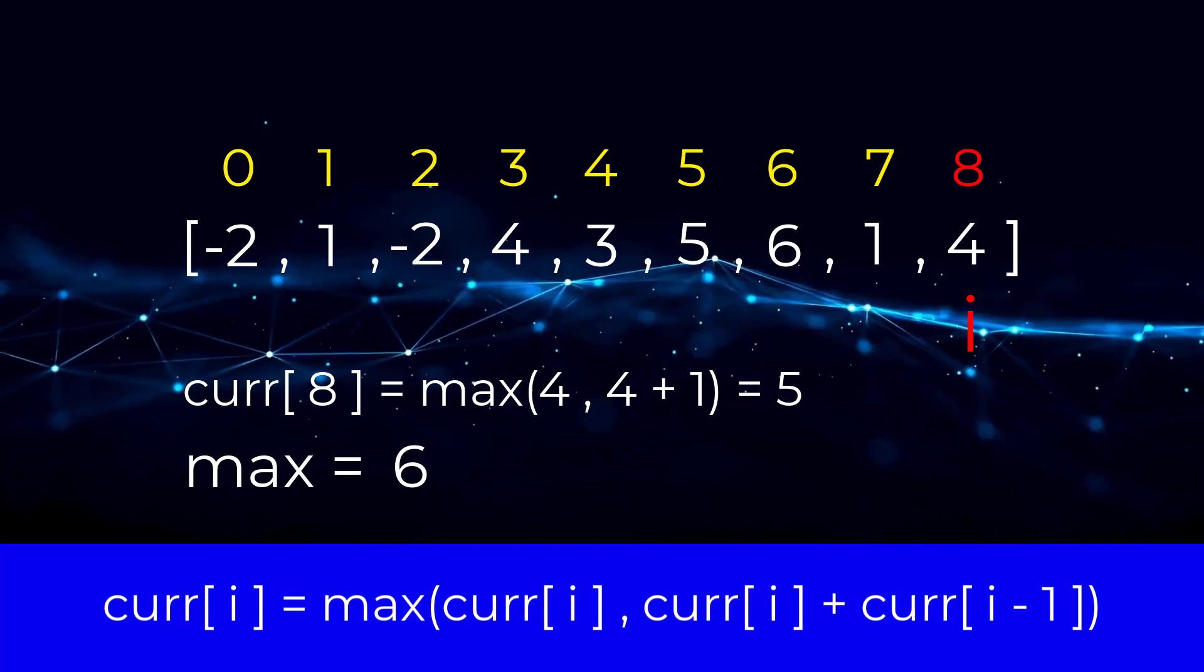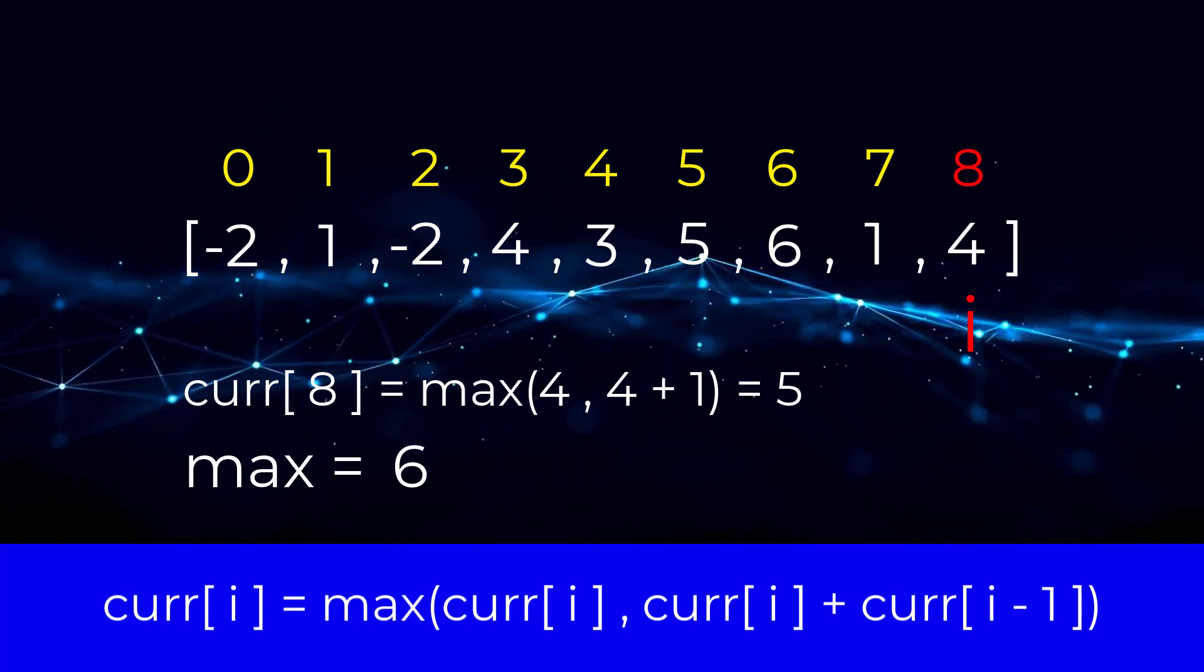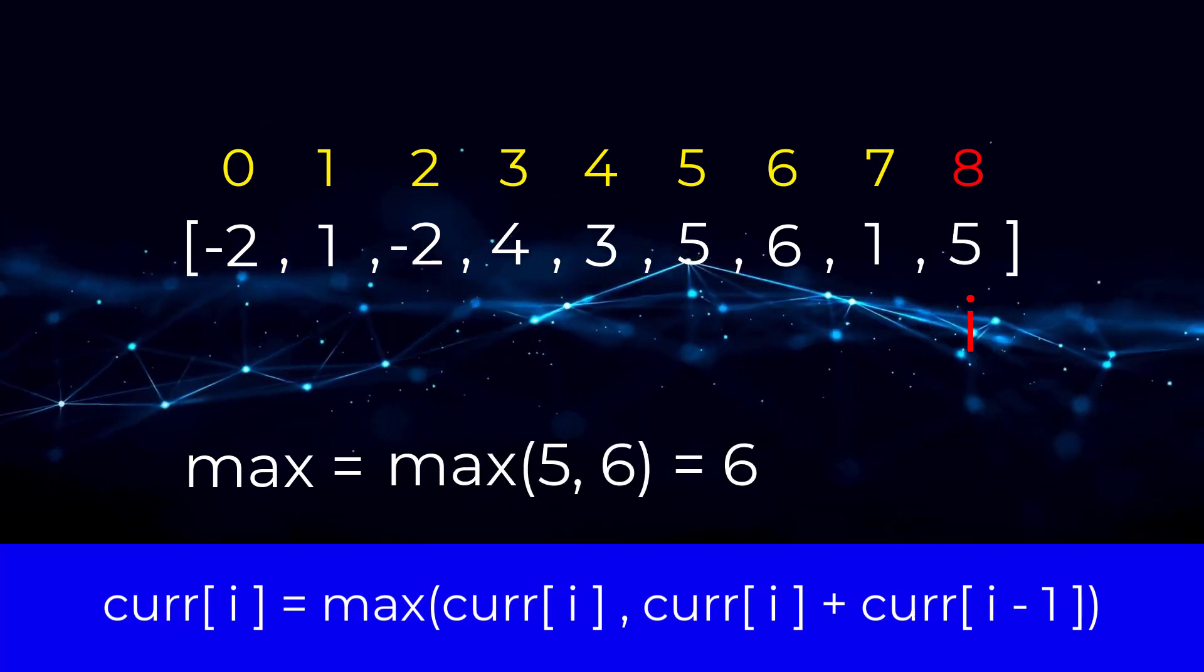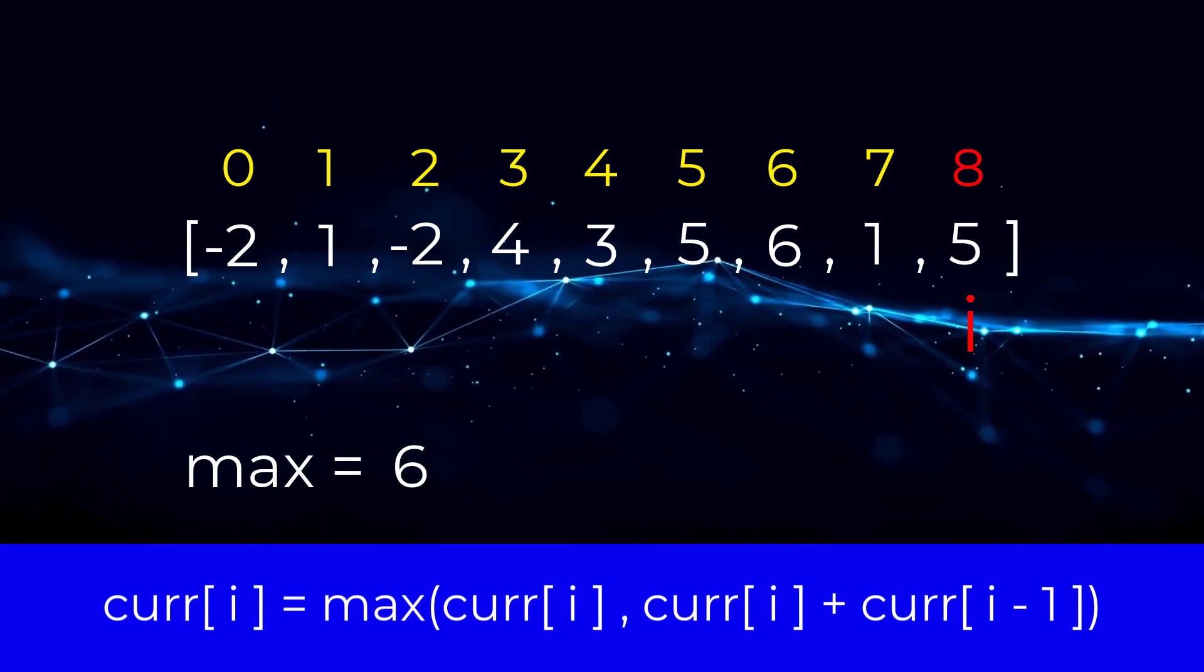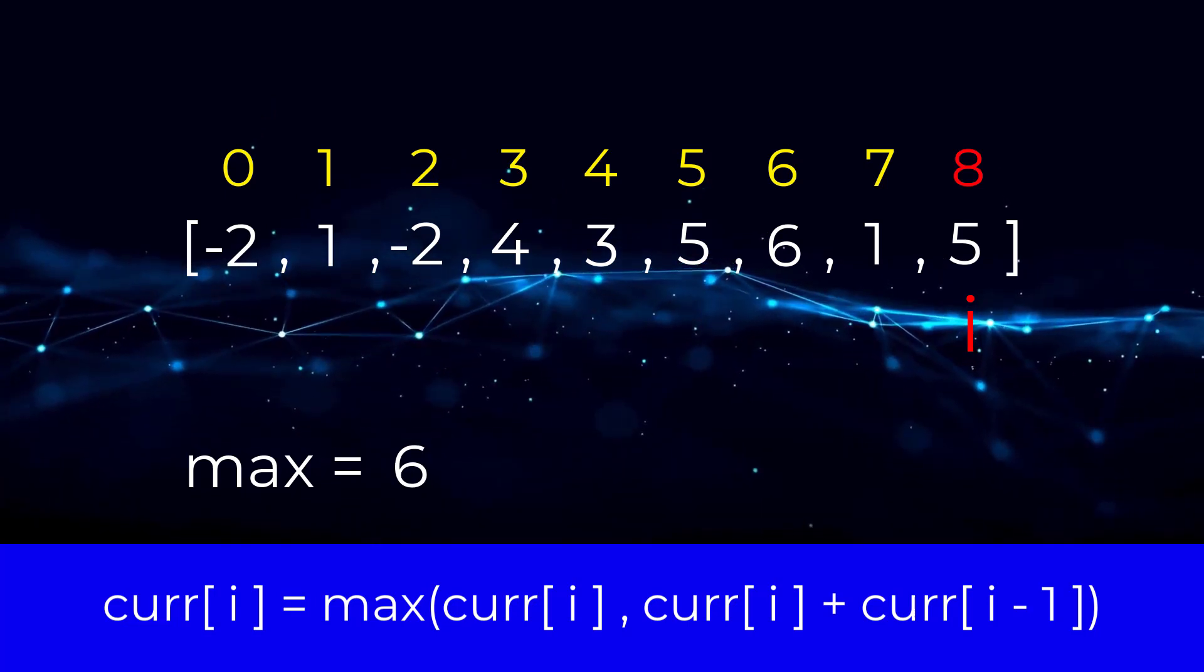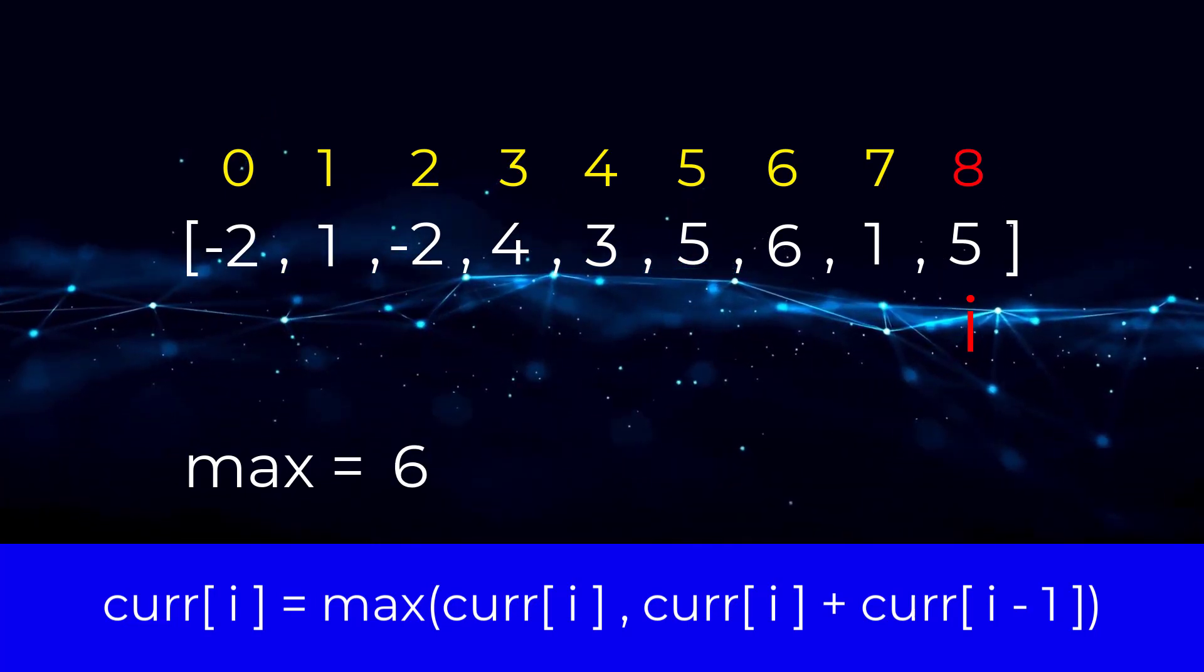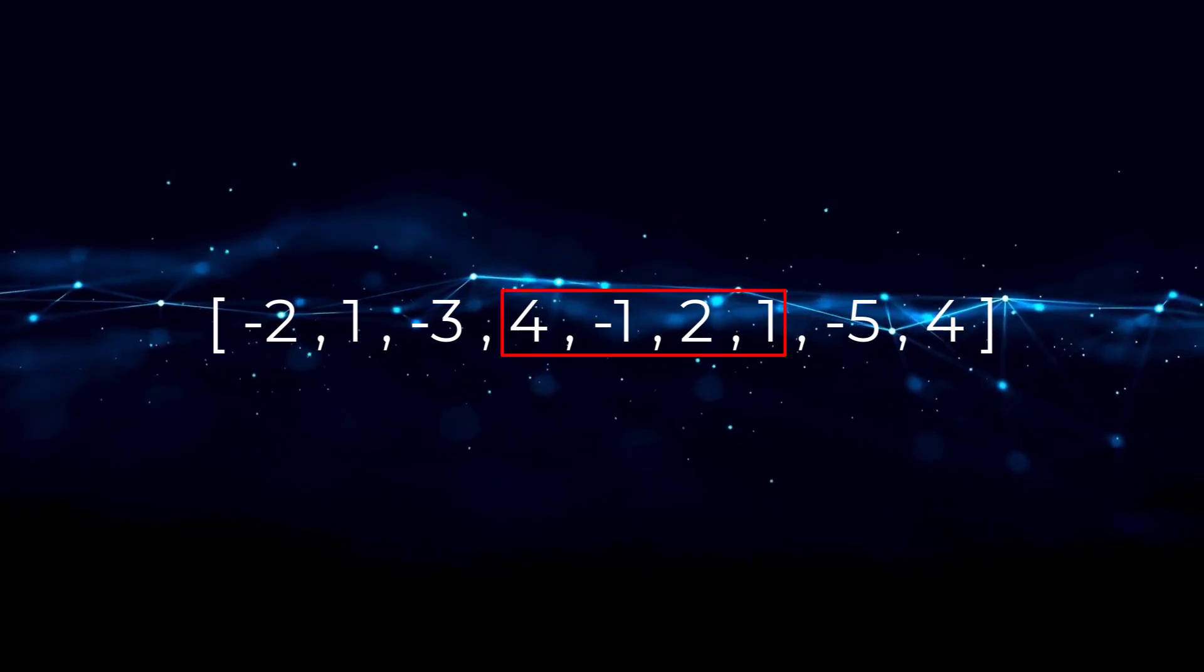Next, we move to the value four. The max between four and five equals five, and we set five as our current position. Finally, we compute the max between six and five, and our max remains as six. By the end of iteration, we are left with a max of six, which corresponds to the following subarray.